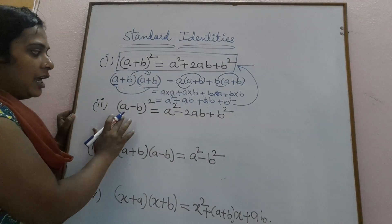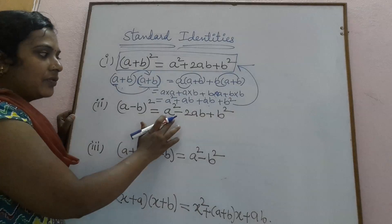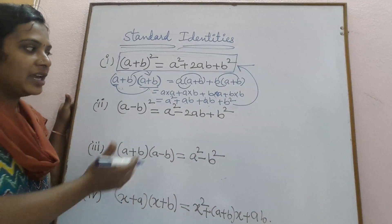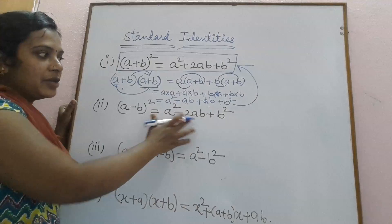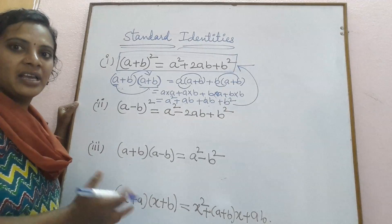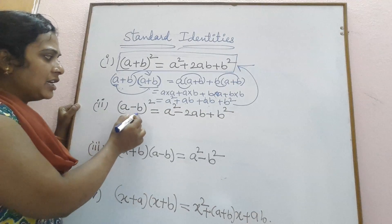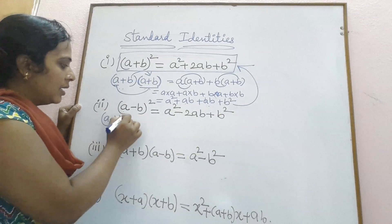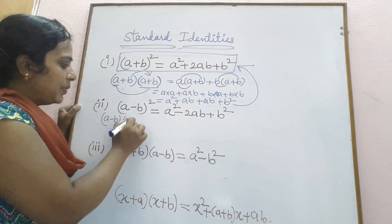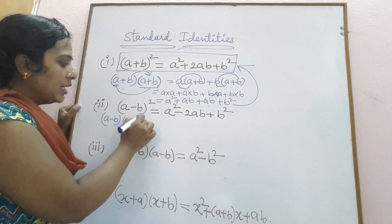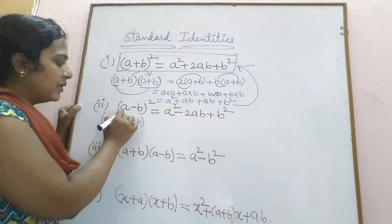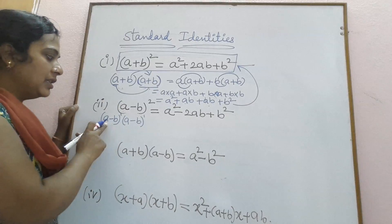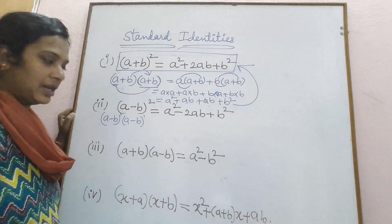The second identity: a minus b whole square equals a squared minus 2ab plus b squared. How do we get this? A minus b whole square is nothing but a minus b into a minus b. Since the bases are the same, powers can be added, giving us a minus b whole square.